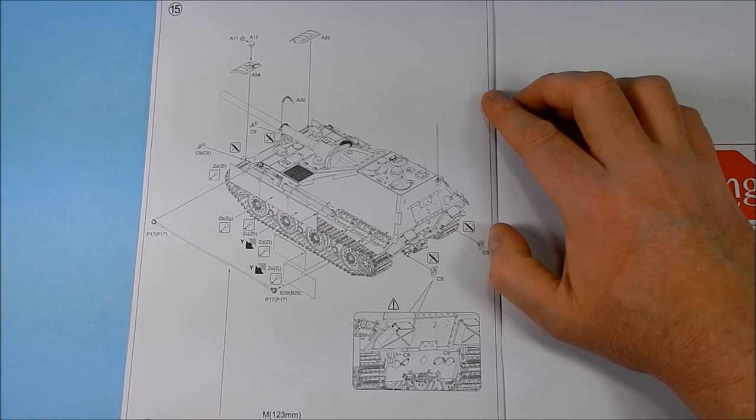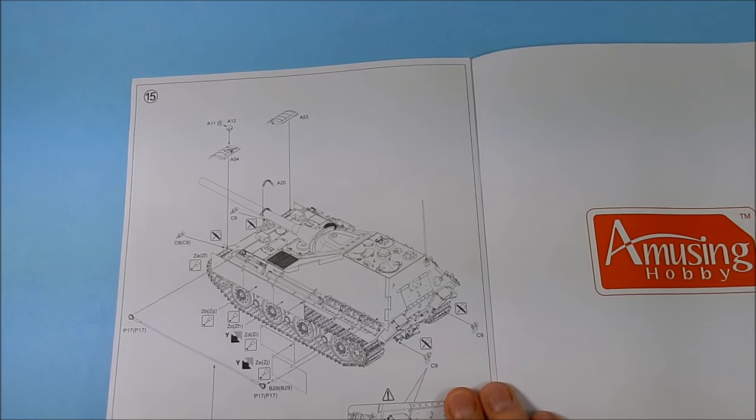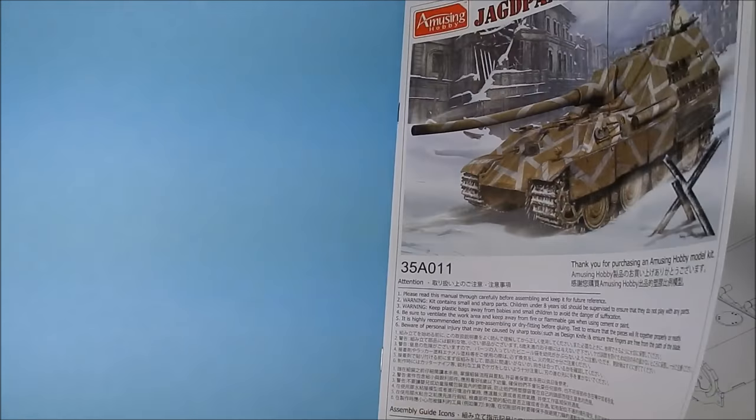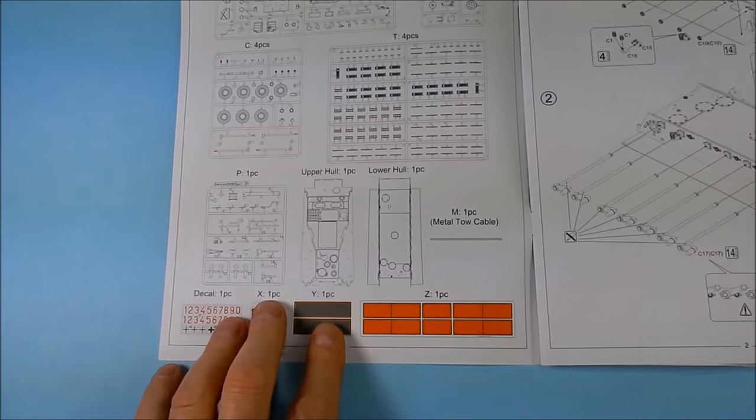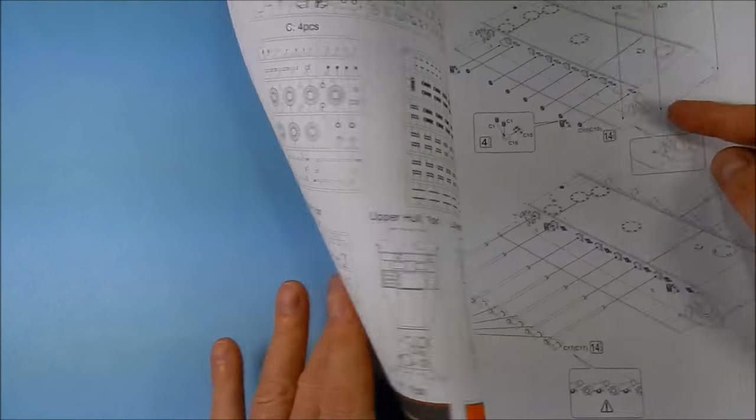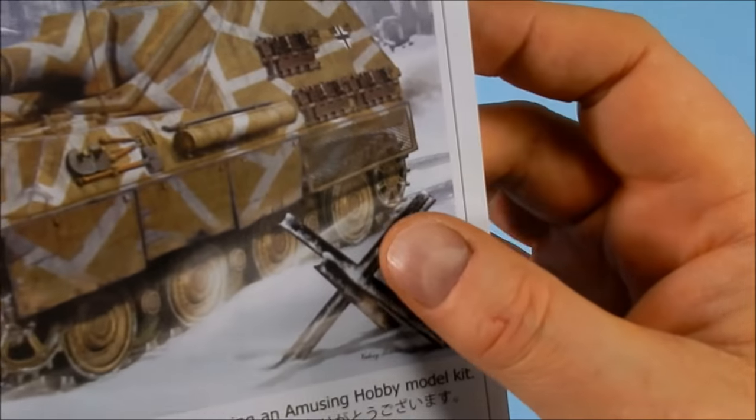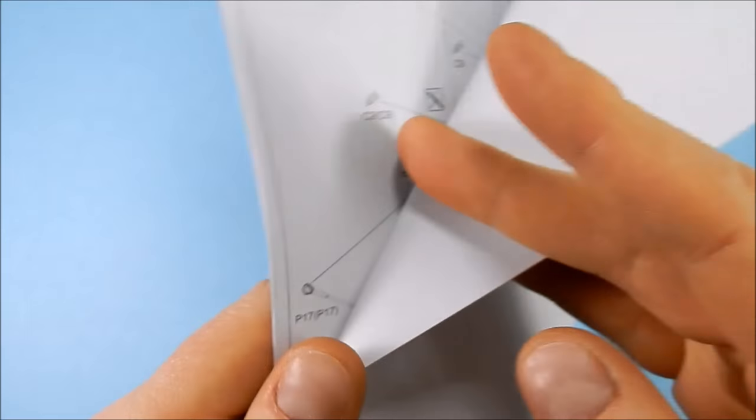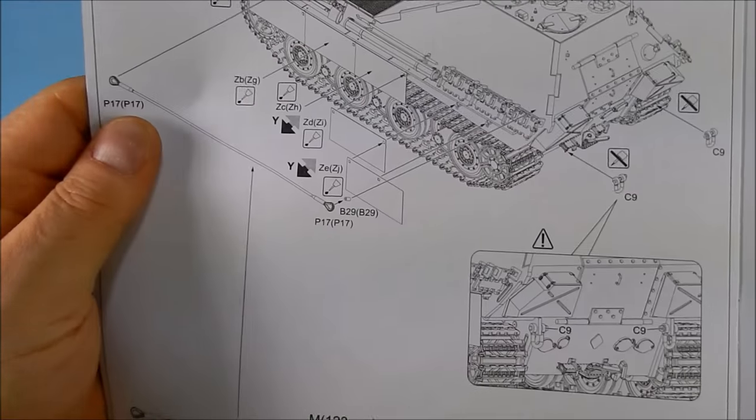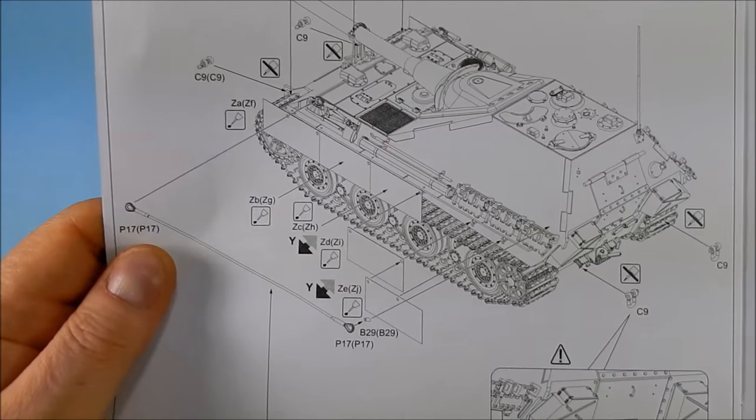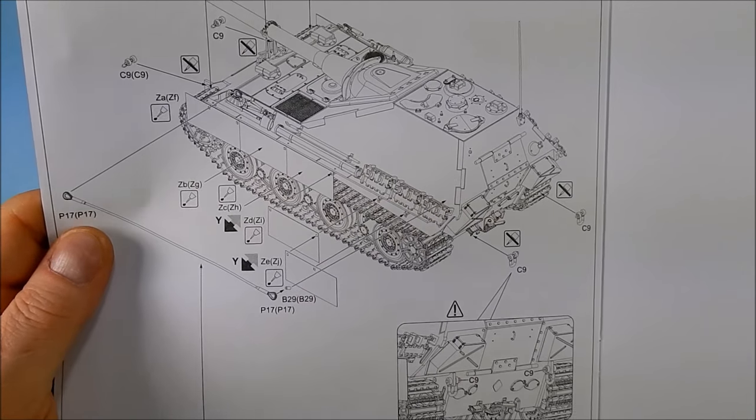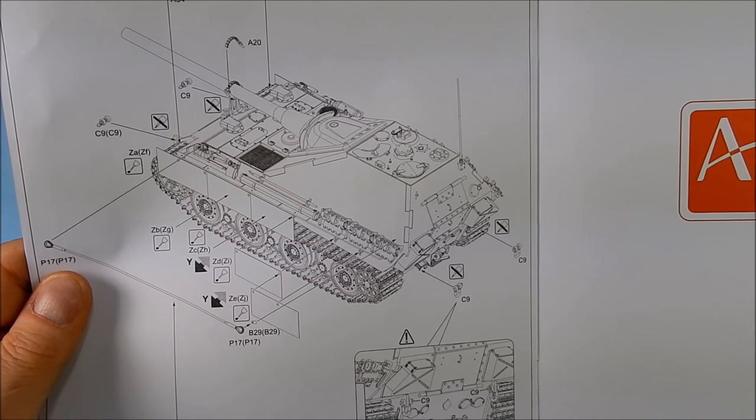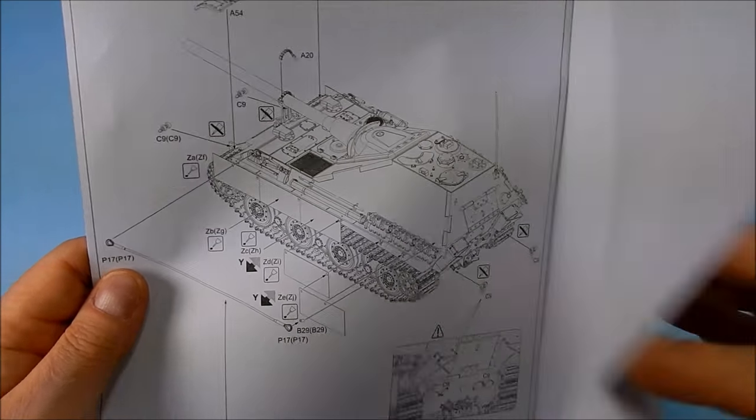Now one thing to note here is one of the photo etch pieces that they have is part Y which is a mesh set which if you look here it's obviously for the rear section but they don't mention it here. So I guess they presume you have to be smart enough to figure that out for yourself. But we'll go through all the parts now and see what else is going on.